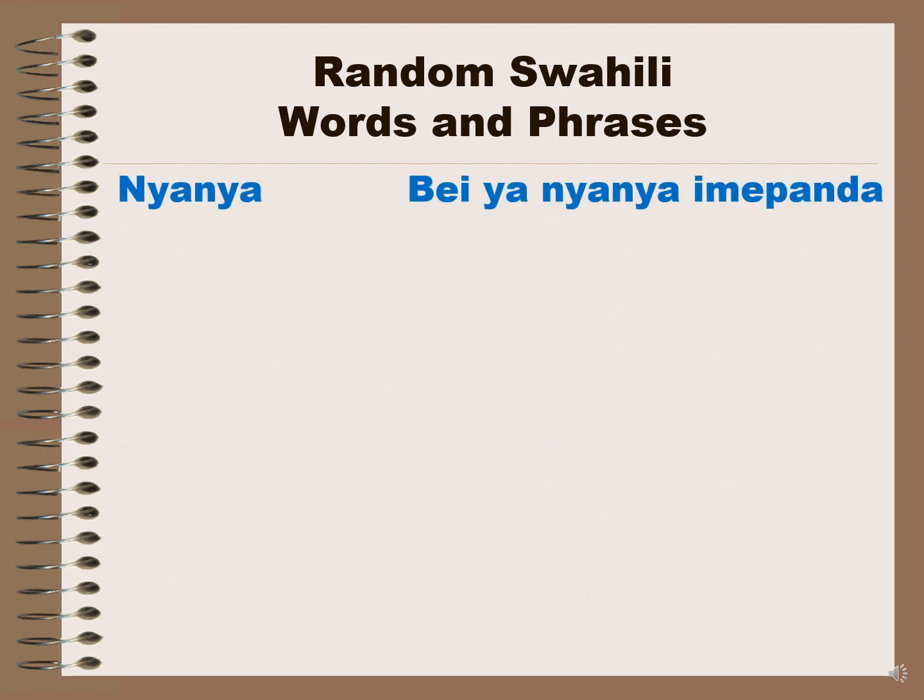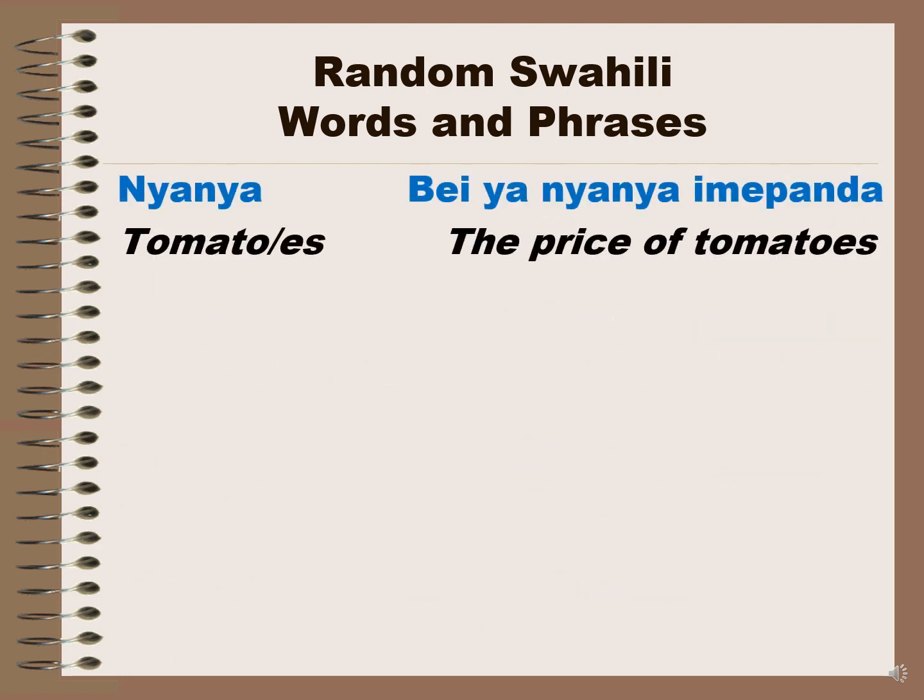Nyanya is tomato or tomatoes. In Swahili, nyanya — the singular and plural are the same. Whether you say nyanya for just one or more than one, it remains the same.